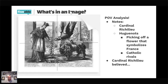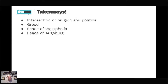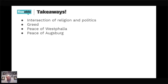Takeaways: this is the beginning of where we see the intersection of religion and politics. Greed plays a major role — people want money, power, they want it all. The Peace of Westphalia ends the Thirty Years' War by essentially reinstating the Peace of Augsburg. Calvinists are getting excluded from everything, Anglicans are not involved at all, and everyone's forgetting that there are large Jewish, Muslim, and Eastern Orthodox populations in Europe who are also not being addressed.